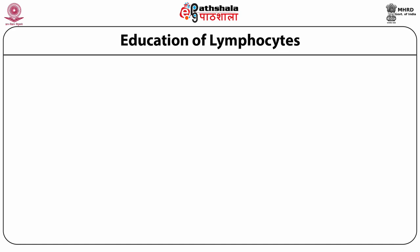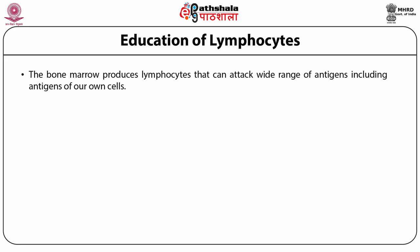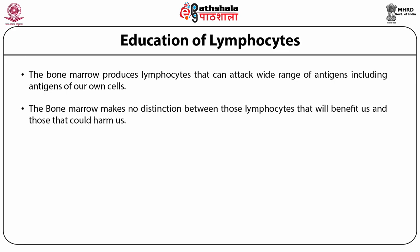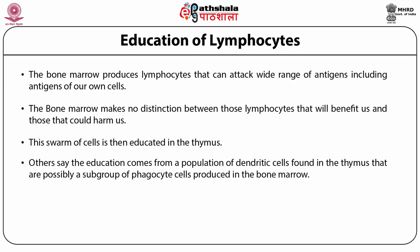It is in the thymus that education of lymphocytes takes place. The bone marrow produces lymphocytes that can attack a wide range of antigens, including antigens of our own cells, making no distinction between lymphocytes that will benefit us and those that could harm us. Immature lymphocytes are unable to respond to any antigenic challenge, so their migration from bone marrow to the thymus is uneventful. There is a dispute over which cells in the thymus are the instructor: some say epithelial cells, others say dendritic cells found in the thymus.